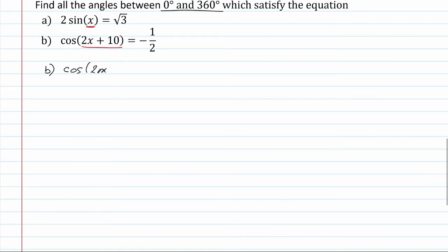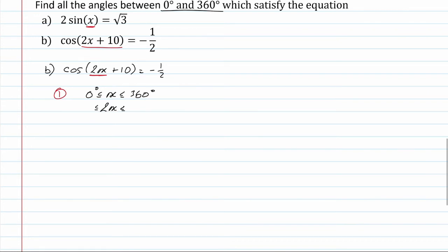For the second question, cosine of 2x plus 10 equals negative 1 over 2. For step one, the domain for x is 0 to 360, but the domain of the function cosine is not. We start by writing x between 0 and 360. Since we have 2x, we multiply every value by 2: 0 times 2 is 0 and 360 times 2 is 720. Then we add the plus 10, finding that 2x plus 10 is between 10 degrees and 730 degrees.